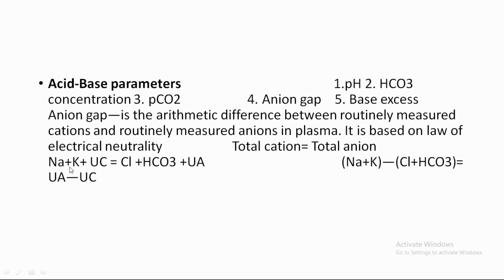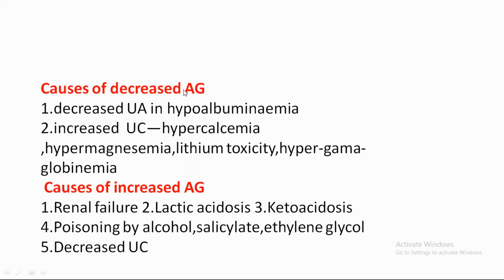The unmeasured cations include sodium and potassium; unmeasured anions include chloride and bicarbonate. Routine plasma electrolyte testing is used to calculate the anion gap. Decreased anion gap is caused by hypoalbuminemia. Increased anion gap causes include hypercalcemia, hypermagnesemia, lithium toxicity, and hypergamma-globulinemia.